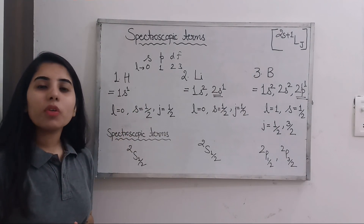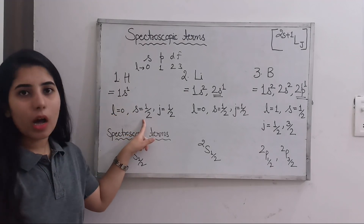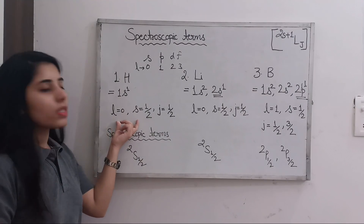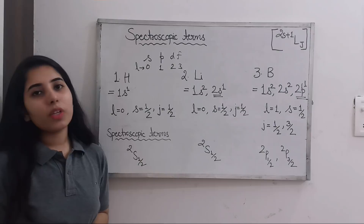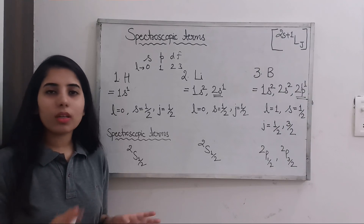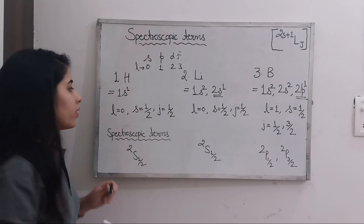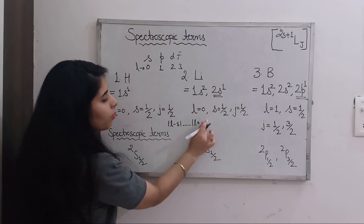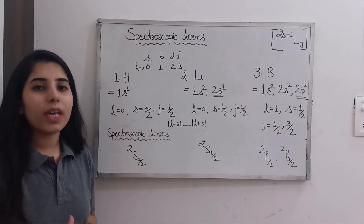The spin S will be 1/2 for hydrogen. Next, the value of J ranges from |L − S| to L + S. Writing 0 − 1/2 and taking the modulus gives 1/2, and 0 + 1/2 also gives 1/2. In both cases we get just 1/2, so J = 1/2. This is L − S to L + S in modulus, and we are getting only one value: J = 1/2.